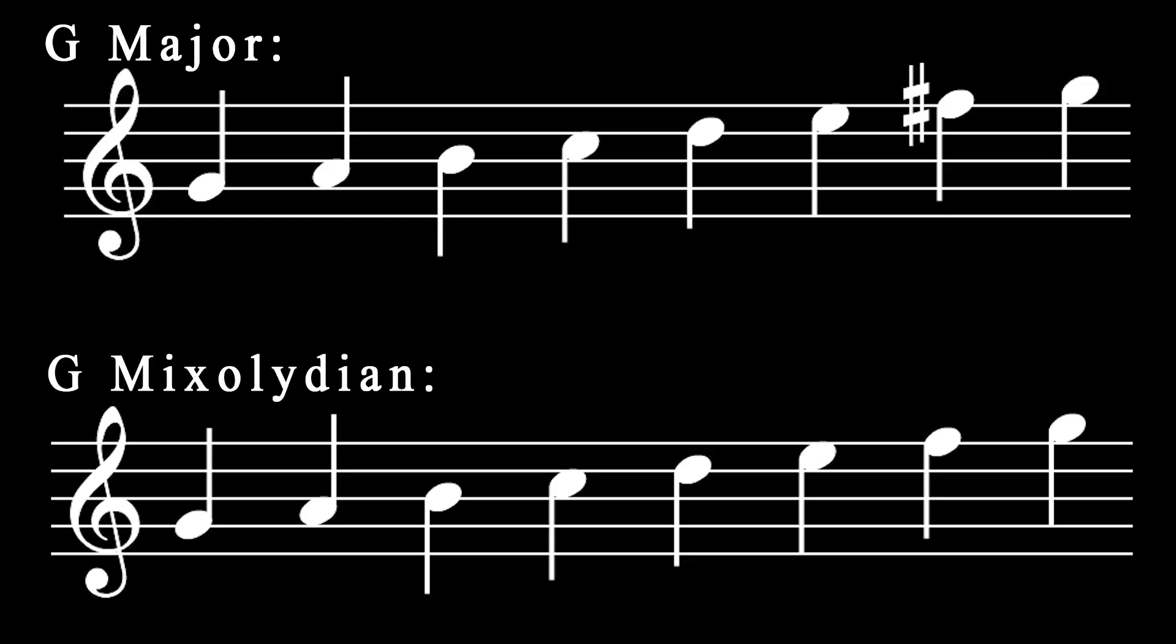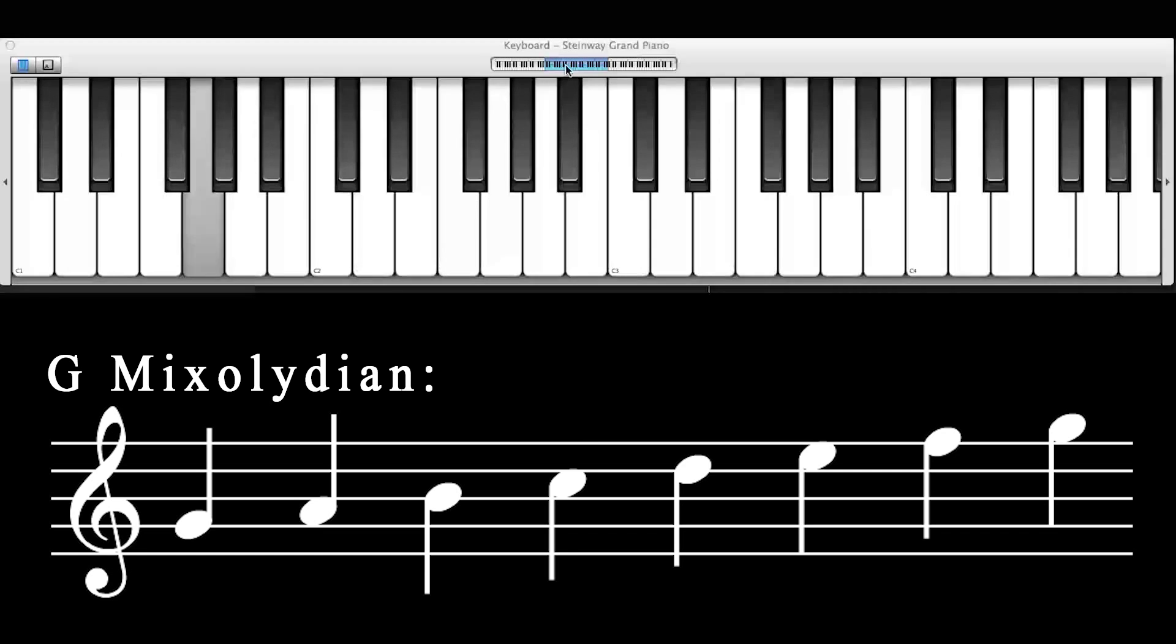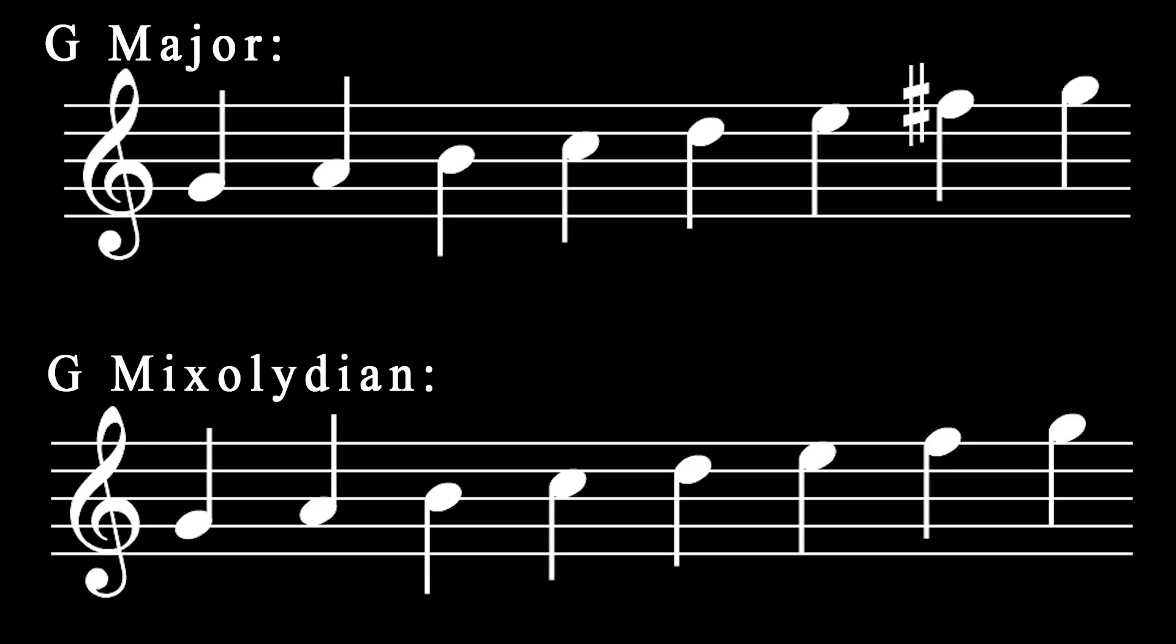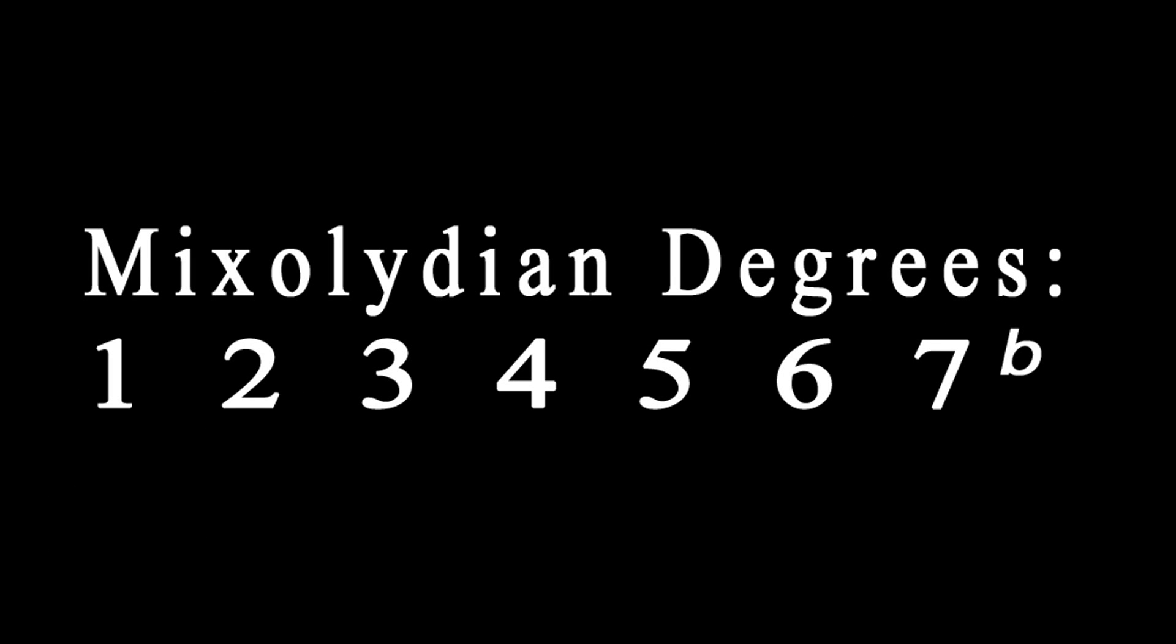Here's another example, the mixolydian mode. If you were to look this scale up, you'd find that the mixolydian mode is identical to the major scale, except that the 7th scale degree is flattened by a half step. Here's what it looks like. Let's say you wanted to play the mixolydian mode in the key of G. If we know that the mixolydian scales are 1, 2, 3, 4, 5, 6, and flattened 7th, we can convert the G major scale into the G mixolydian scale by flattening the 7th scale degree a half step.